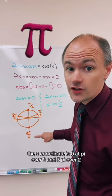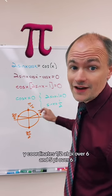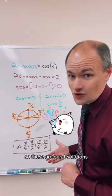The x-coordinate is 0 at pi over 2 and 3 pi over 2. The y-coordinate is 1 half at pi over 6 and 5 pi over 6. So these are our four solutions.